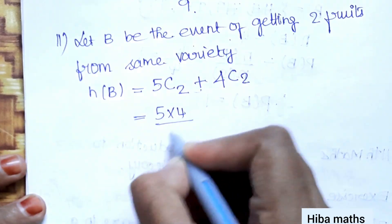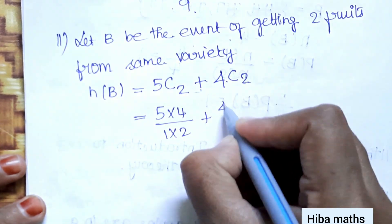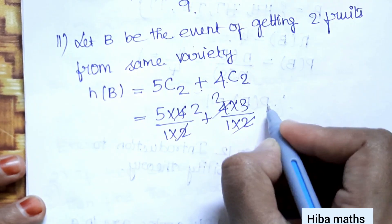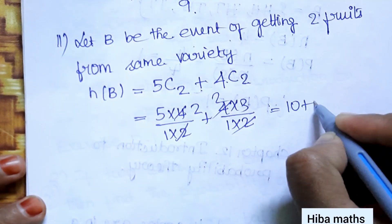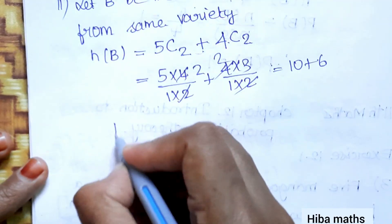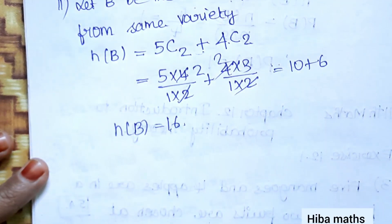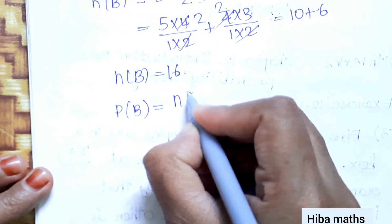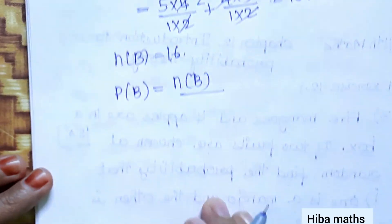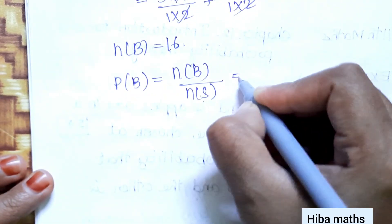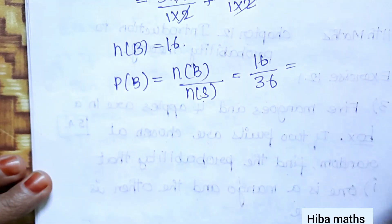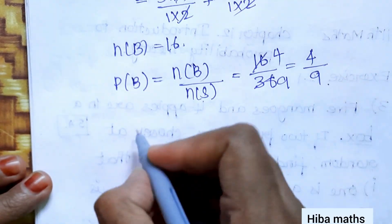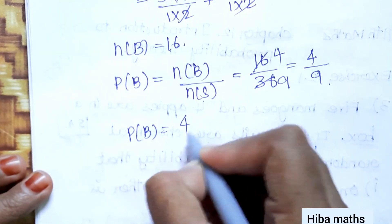So n(B) = 5C2 + 4C2. 5C2 = (5×4)/(1×2) = 10, and 4C2 = (4×3)/(1×2) = 6. So n(B) = 10 + 6 = 16. Therefore P(B) = n(B) / n(S) = 16/36 = 4/9.